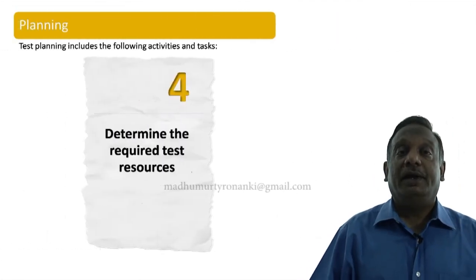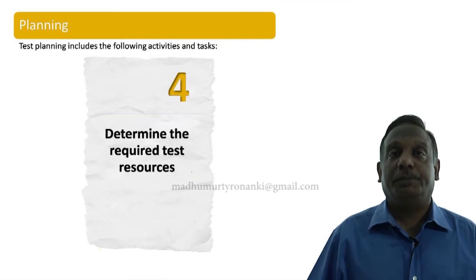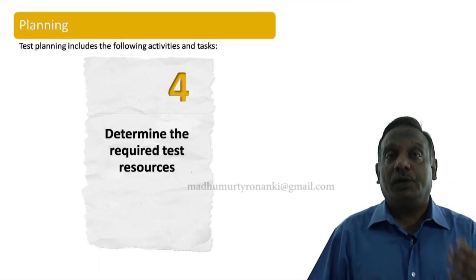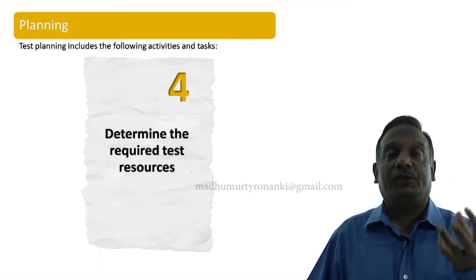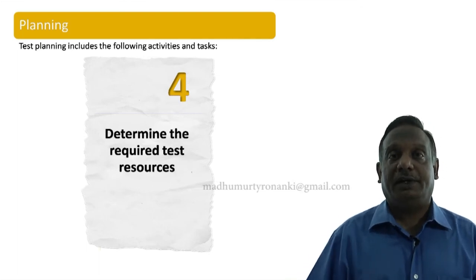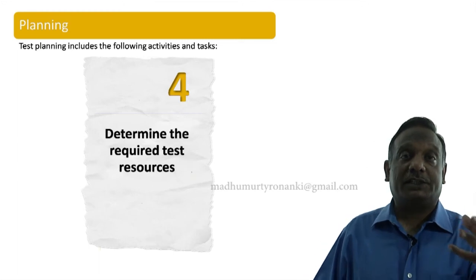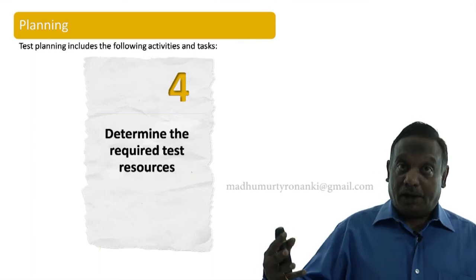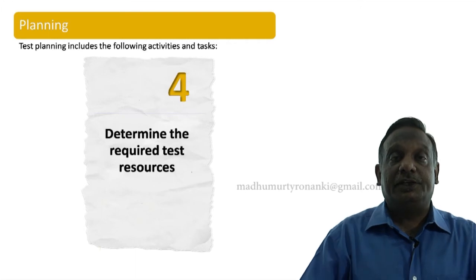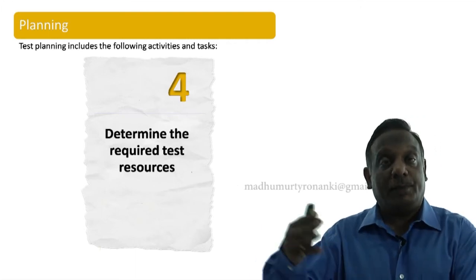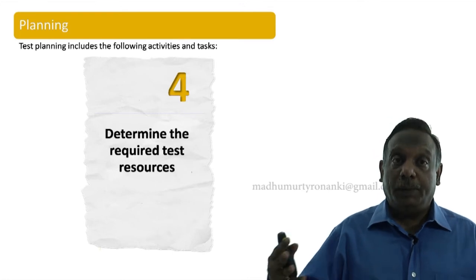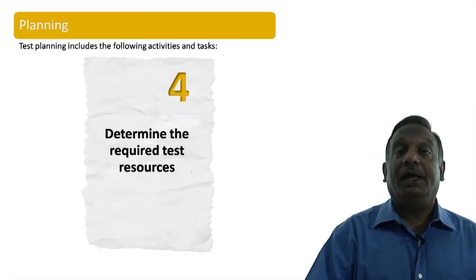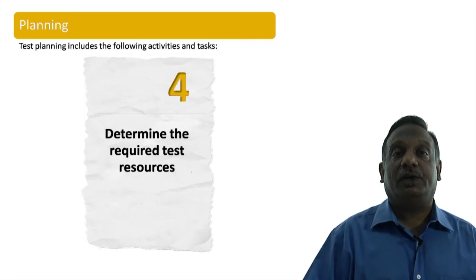The fourth item is to determine the required test resources. Based on the scope, size, and nature of the testing project, you have to think about what number of resources are needed and with what skills. If a testing project involves both functional testing and performance testing, you need resources who understand functional testing with knowledge of the business process, and also resources who can perform performance testing using tools like LoadRunner or JMeter. Determining the right and required test resources is the next key planning item.